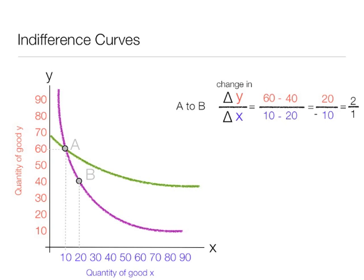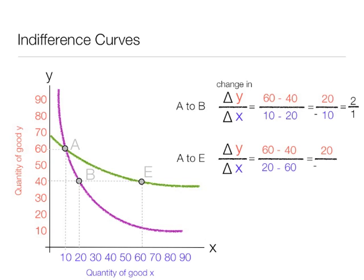Now we have points A and B. Let me put in another indifference curve, this green one, to show you the difference when it is flat. The indifference curve is flat. I am going to add another point, point E. Now if we move from A to E, it is 60 minus 40 divided by 20 minus 60, 20 divided by negative 40. And that equals just 1 half. What this means is the consumer values y more than x, the green indifference curve versus the purple indifference curve.